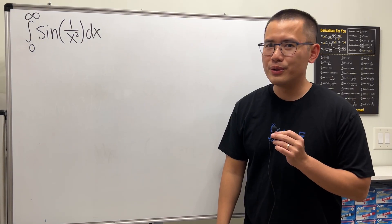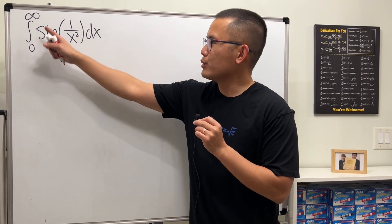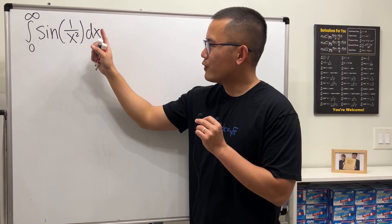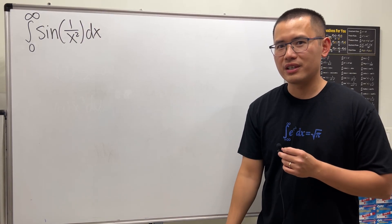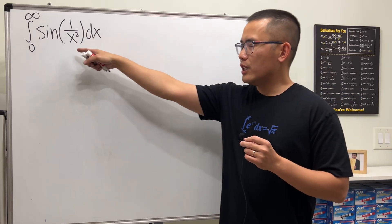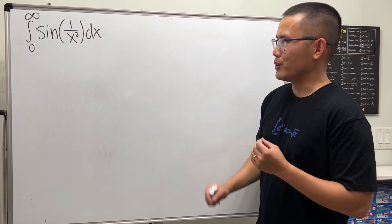All right, welcome to the video where we are going to compute the integral going from 0 to infinity of sin of 1 over x squared. If you haven't seen the discussion video, make sure you check that out first. This integral actually converges. So how do we do it?